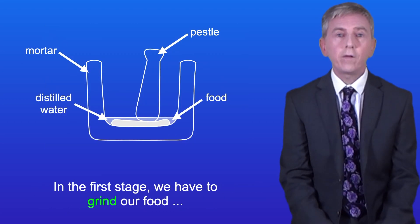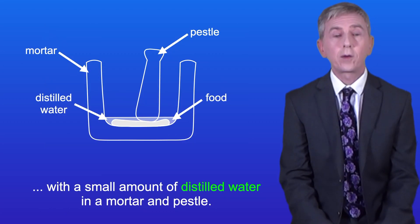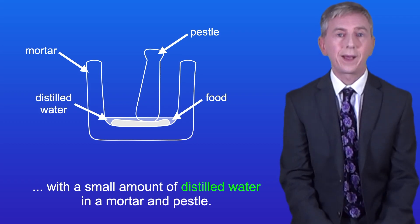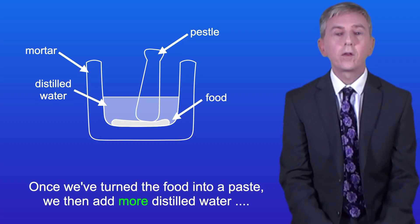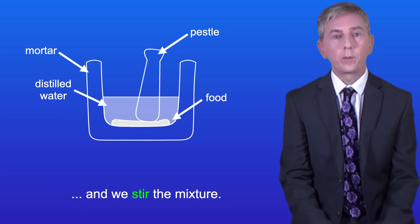In the first stage we have to grind our food with a small amount of distilled water in a mortar and pestle. Once we've turned the food into a paste, we then add more distilled water and stir the mixture.